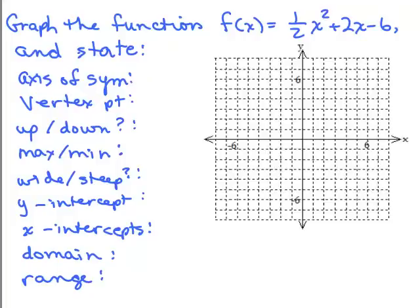We are going to graph this function f(x) = 1/2 x² + 2x - 6. This is a quadratic function, so it's a parabola, and we're also going to state all these things I have on the left, just using all the things you've learned over time. So let's start.